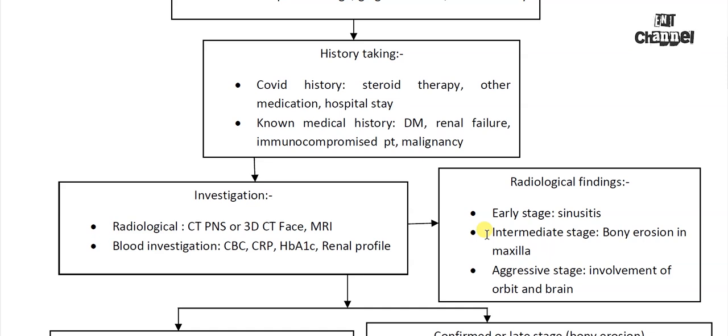That's why with MRI with gadolinium enhancement you better know which areas you have to debride. Along with routine blood tests, complete blood count, C-reactive protein, HbA1c, and renal function tests are necessary.